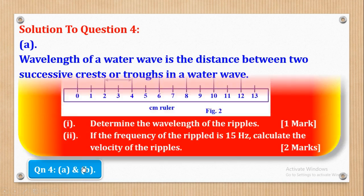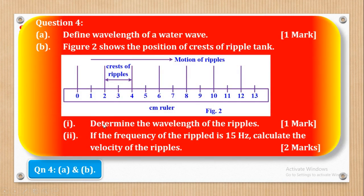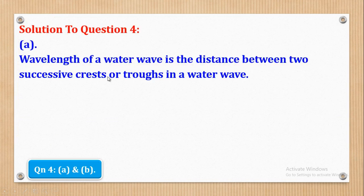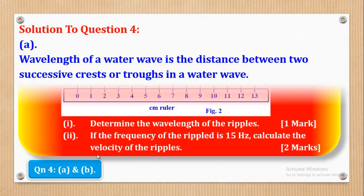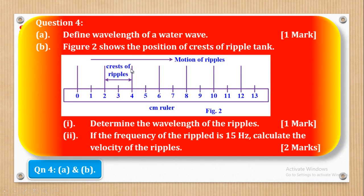For part B, they wanted us to determine the wavelength of the ripples. Remember we said wavelength is the distance between two successive crests. These are the crests — this is one crest and this is another crest. So the distance between these two successive crests is what we call wavelength. Therefore, from the figure, 4 minus 2 will give you 2, so the wavelength is 2 centimeters.